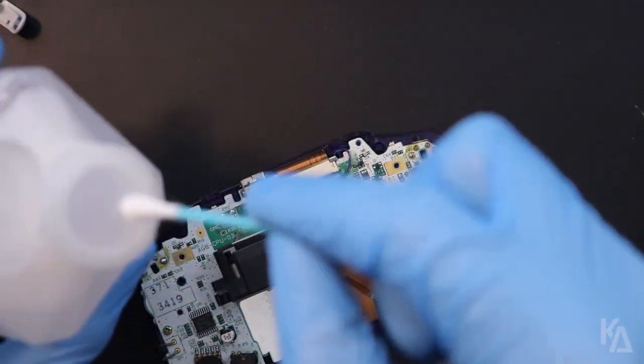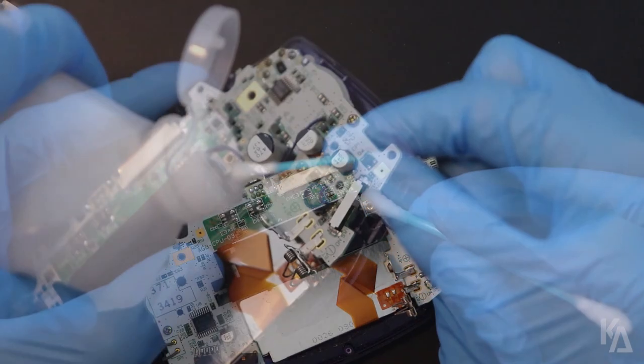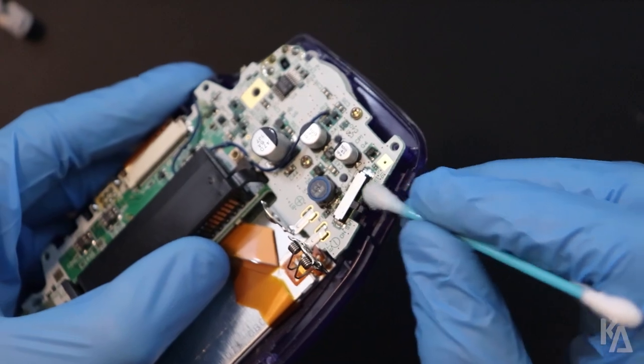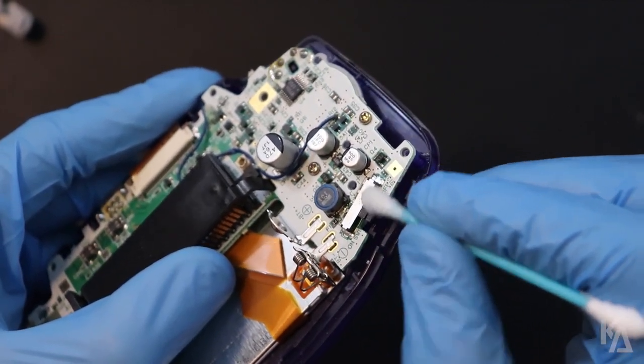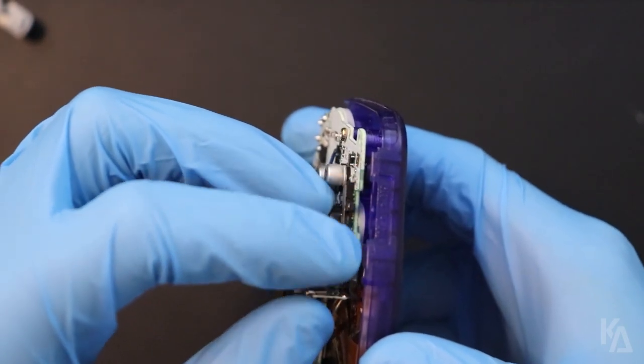For some, using a cotton swab and some isopropyl alcohol, working it into the power switch to clean it and dislodge any dirt particles is enough to get it working normally again. For most, however, like in my case, this won't be enough and will need to replace the power switch entirely anyways.